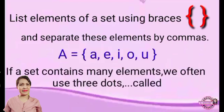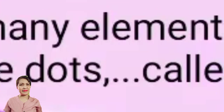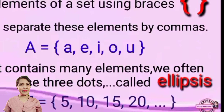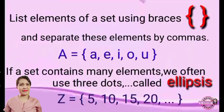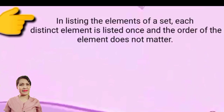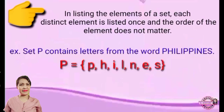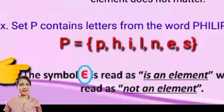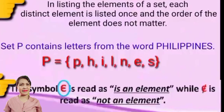When a set contains many elements, we often use three dots, called ellipses. In listing the elements of a set, each distinct element is listed once and the order of elements does not matter. The symbol ∈ is read as 'is an element of,' while the symbol ∉ is read as 'not an element of.'